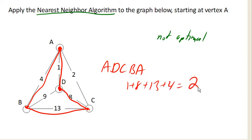Wow, that was like the worst circuit in the graph. So it turns out that, like I mentioned, the nearest neighbor algorithm is not always optimal. And here's a case where it certainly gave us a non-optimal result.